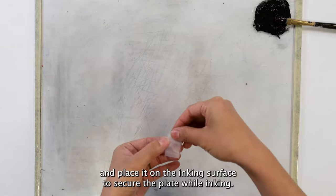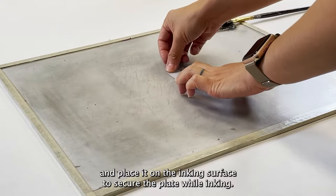Next, roll a strip of tape and place it on the inking surface to secure the plate while inking.